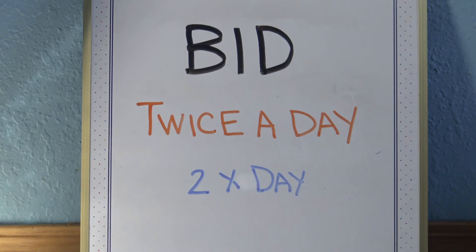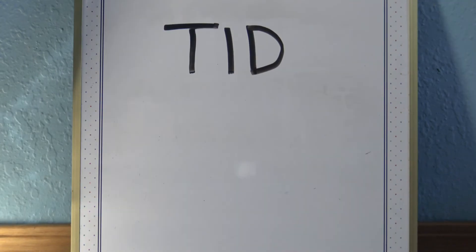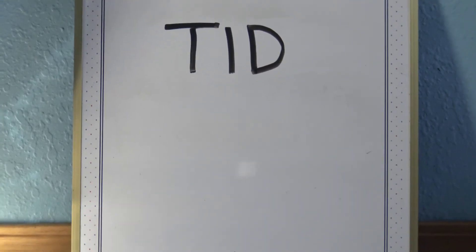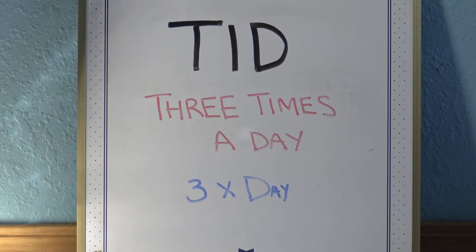BID — BID stands for twice a day, like bicycle. TID — TID is three times a day, like tricycle. It's Latin — TID, three times a day.